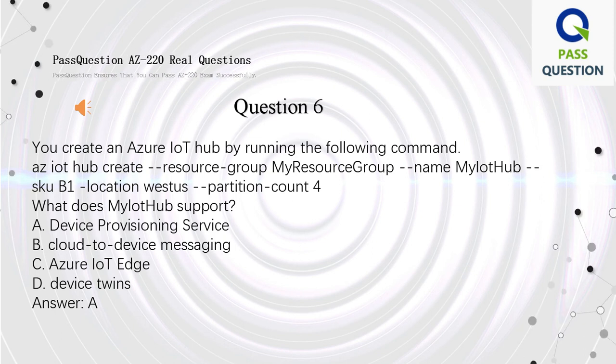Question 6. You create an Azure IoT Hub by running the following command: az iot hub create, resource-group MyResourceGroup, name MyIoTHub, SKU B1, location westus, partition-count 4. What does MyIoTHub support? A. Device provisioning service. B. Cloud-to-device messaging. C. Azure IoT Edge. D. Device Twins. Answer: A.